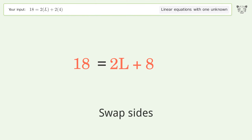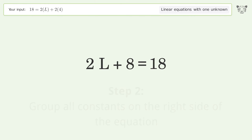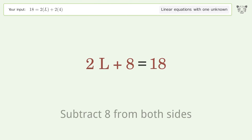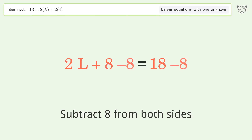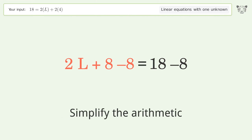Swap sides. Group all constants on the right side of the equation by subtracting 8 from both sides. Simplify the arithmetic.